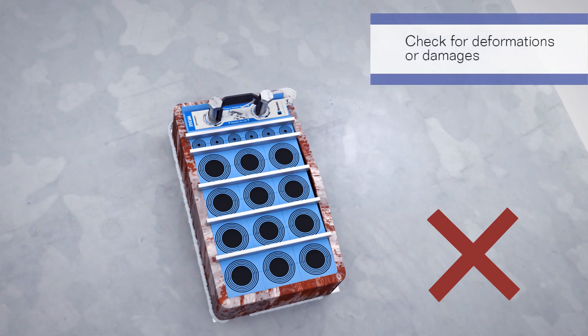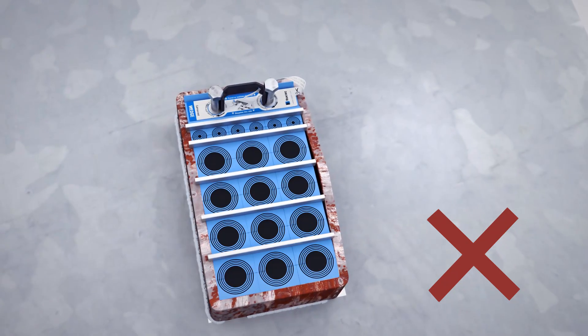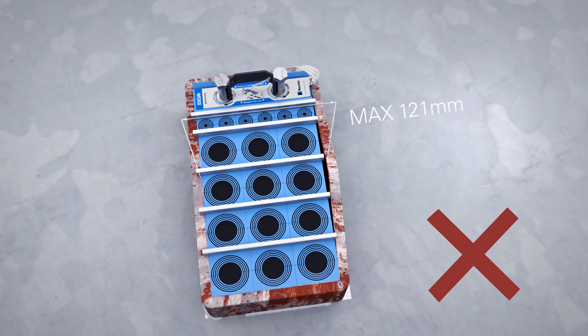Check the seal for deformation or for mechanical damage, such as excessive corrosion or incomplete welding. The internal width should not exceed 121 millimeters.